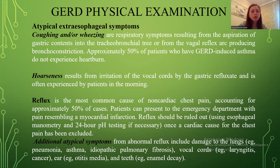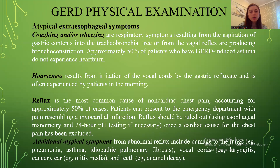Additional atypical symptoms from abnormal reflux include damage to the lungs — for example, pneumonia, asthma, and idiopathic pulmonary fibrosis — damage to the vocal cords, for example laryngitis and cancer, damage to the ear such as otitis media, and dental enamel decay.